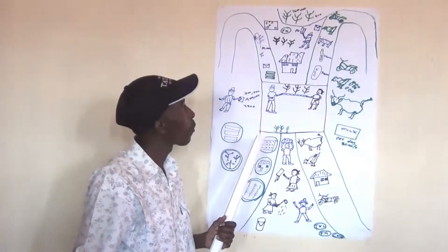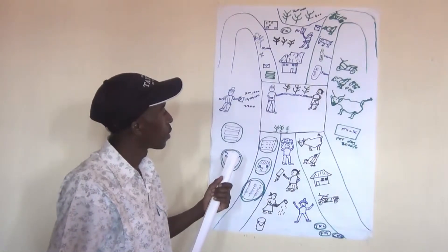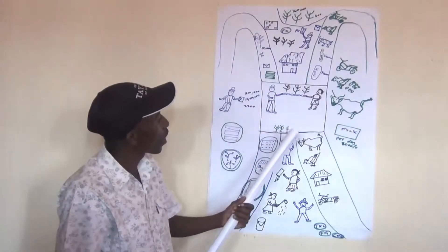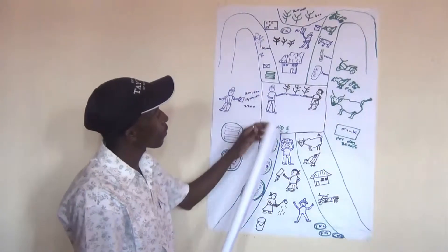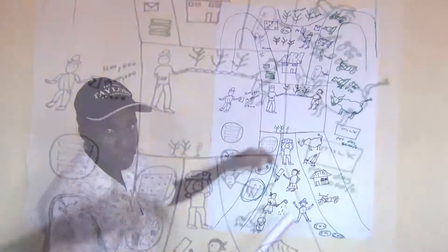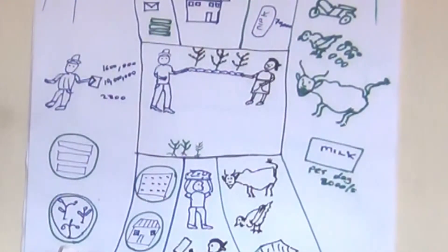This is a Business Coffee Tree. You start in the middle where you show your vision — an increase in coffee production. Below on the trunk it shows where you are now, where production is very low.